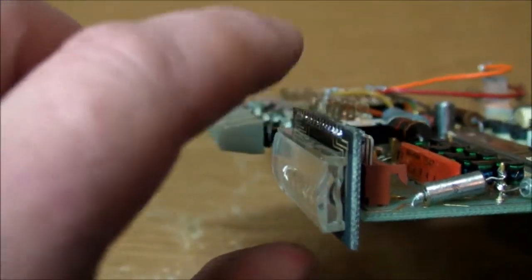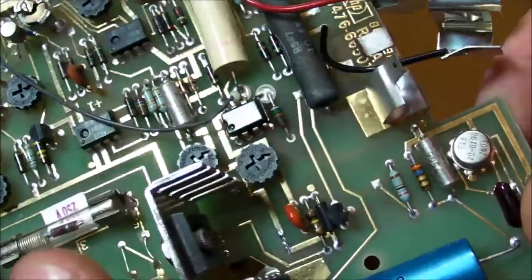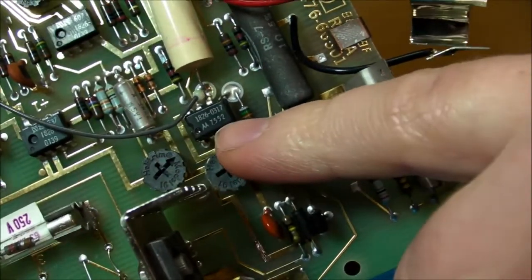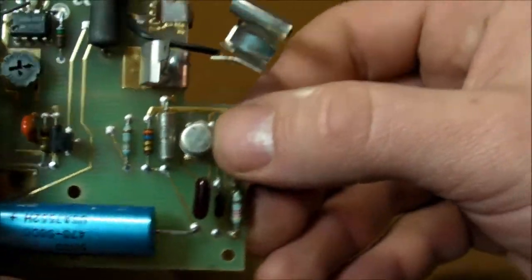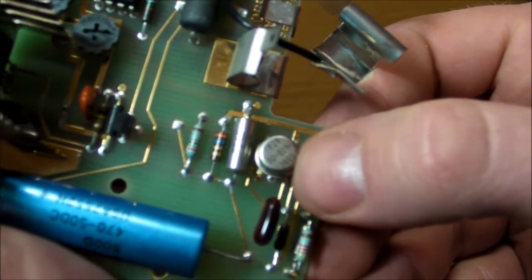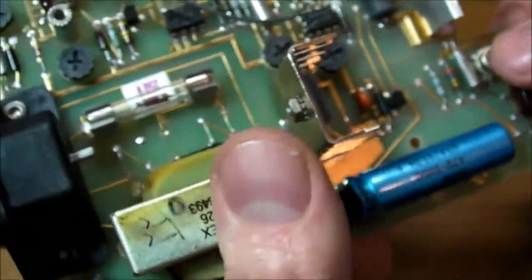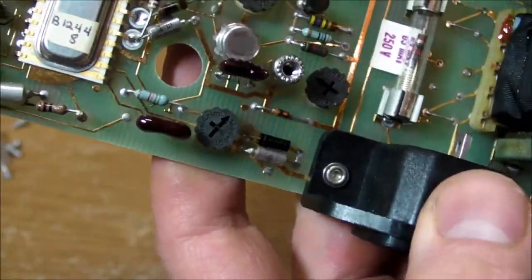And one final note before the repair: date of manufacture. I managed to find two date codes—this IC has a 7552, and this one in the metal can looks like a 7603. So certainly 1976 is when this thing would have been manufactured.